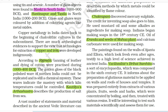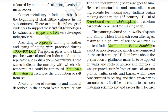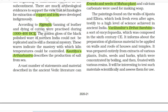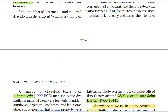Oil of eranda and seeds of mahua plant and calcium carbonate were used for making soap. The paintings found on the walls of Ajanta and Ellora, which looked fresh even after ages, testify to a high level of science achieved in ancient India. Varahamihira's Brihat Samhita is a sort of encyclopedia composed in the 6th century CE. It describes the preparation of glutinous material to be applied on walls and roofs of houses and temples, prepared entirely from extracts of various plants, fruits, seeds and barks concentrated by boiling and treated with various resins.